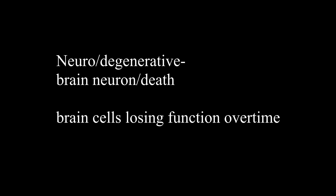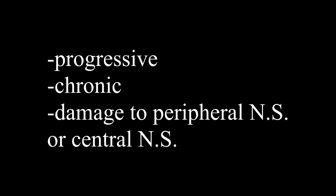Neuro refers to the brain and degenerative refers to death, so together it would be brain neuron death. The brain cells are losing function over time in all of these conditions. Neurodegenerative disorders are typically progressive and chronic, and they cause damage to the peripheral nervous system or the central nervous system — in some cases, both.